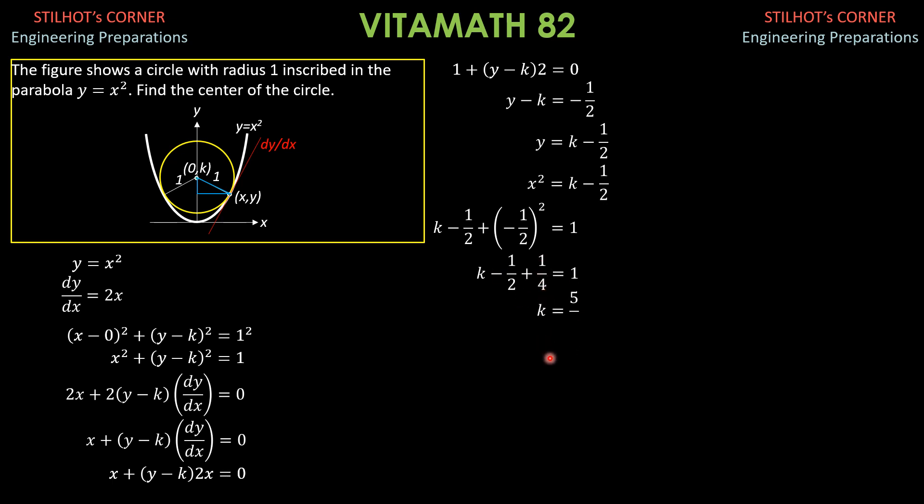So, 1 and 1 fourth or 5 fourths. So, k is 5 fourths. Therefore, the center is at 0 comma 5 fourths.